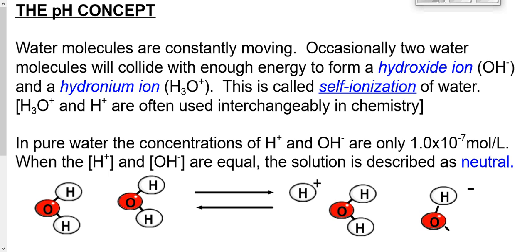pH is a way of measuring how strong an acid something is, but I think pH is better thought of as a simple way to manage the really big, unwieldy numbers that we deal with as chemists.